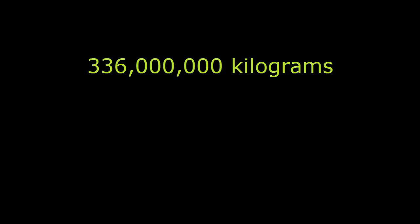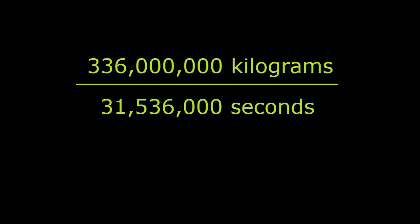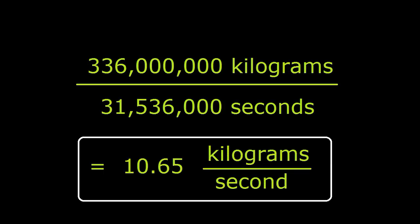That is, at the end of the first year, we're going one-tenth light velocity. There are 31,536,000 seconds in a year. So we divide this time into the amount of fuel to be burned and get 10.65 kilograms of deuterium per second.